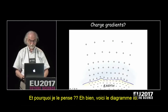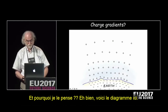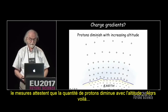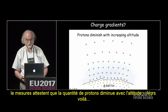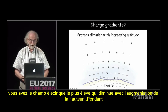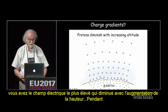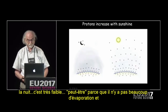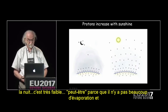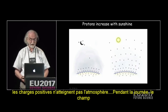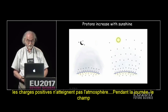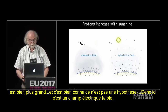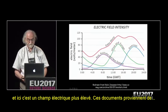Here's a diagram. Here's the earth, and here's the positive charge in the atmosphere. It's known from measurements that protons diminish with increasing altitude, so here you have the highest electric field and it diminishes with increasing altitude. At night it's very small, possibly because there's not much evaporation and the positive charges don't get into the atmosphere. During the daytime it gets much higher. This is well known — not a conjecture. So here is low electric field and here is high electric field.